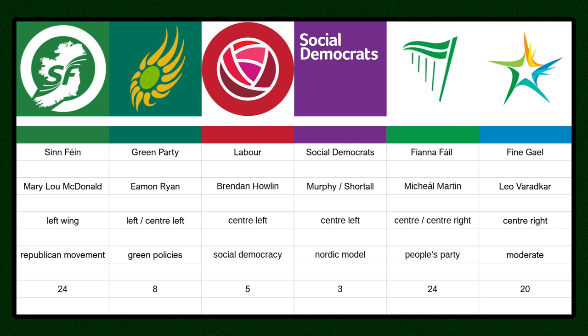These are the largest six parties in Ireland. Before discussing the individual parties, let's talk about the names. Sinn Féin means 'we ourselves' in Irish — it's a very old party, the name chosen in the early 1900s when Ireland was part of the United Kingdom, stressing the need for Ireland to stand apart. Green Party, Labour, and Social Democrats are all straightforward. Fianna Fáil means 'warriors of destiny.' Fine Gael means 'clan of the Gaels' — the Gaels were the Celtic tribe who gave Ireland the Irish language. Gael is really just a synonym for Irish.